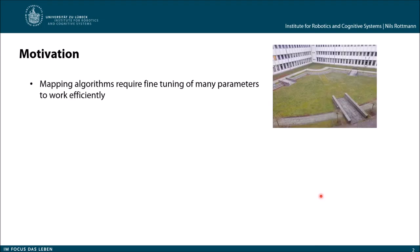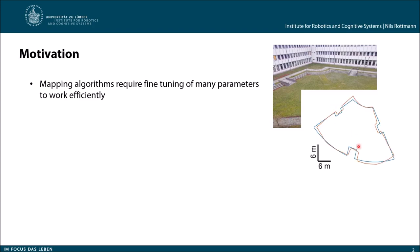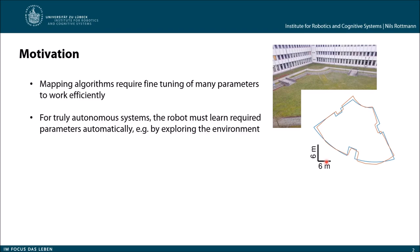Let me start with a short motivation. In general, we want to consider mapping algorithms. What we'd like to do is map the environment of, for example, some lawn field or lawn environment. We'd like to have a mapping of the boundary line, so that we can then efficiently take care of the lawn — more efficiently do some planning algorithms. We could also think of domestic robots like vacuum cleaners and so on.